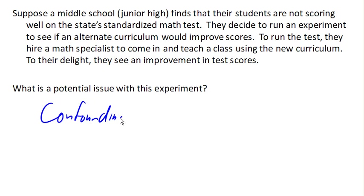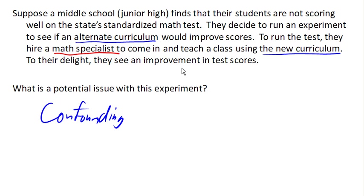Confounding is what happens when you can't tell what caused the result of the experiment. In this case, the original treatment was the alternative curriculum — they're really wondering, is this alternative curriculum going to work? And certainly, they did in fact use the alternative curriculum, so that was a treatment in the study. However, they also hired a math specialist to come and teach it, and so that added a second variable to the experiment. It's unclear whether the improvement they saw was due to the curriculum or whether it was due to the math specialist.